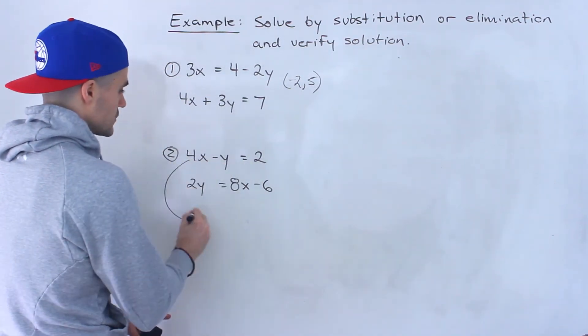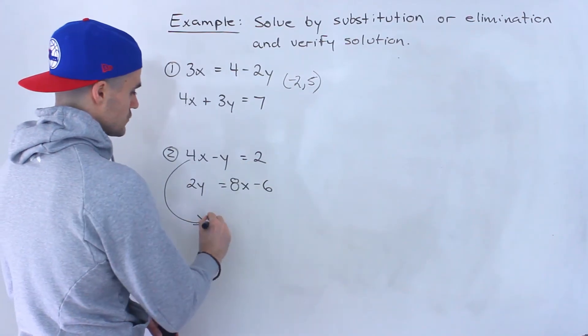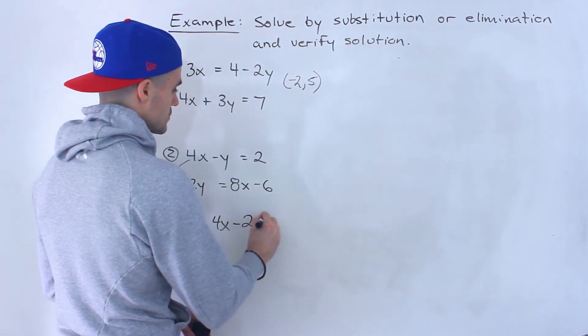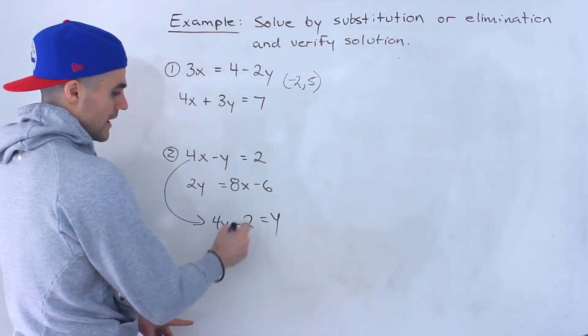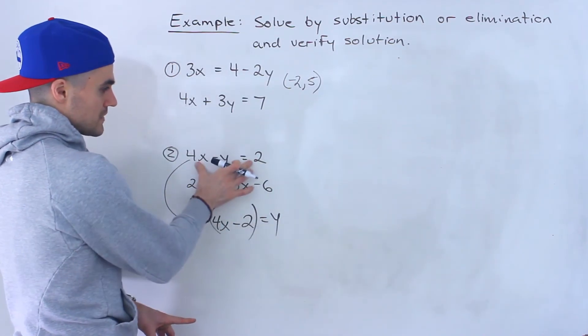What I'm going to do is I'm first going to take this line. I'm going to bring the 2 over. So I'll have 4x minus 2. The negative y I'll bring over so y would become positive here. So notice y equals 4x minus 2 from this line.